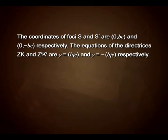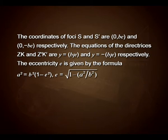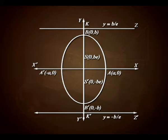The coordinates of foci S and S' are (0, be) and (0, −be) respectively. The equations of the directrices ZK and Z'K' are y = b/e and y = −b/e respectively. The eccentricity e is given by a² = b²(1 − e²), or e = √(1 − a²/b²). The shape of the ellipse is shown in the figure with points S, S', A and A'.